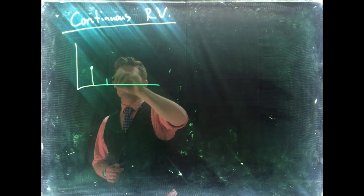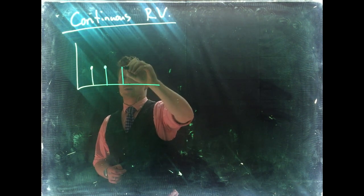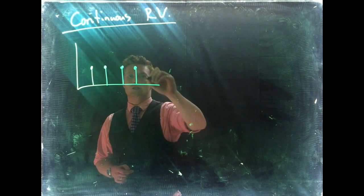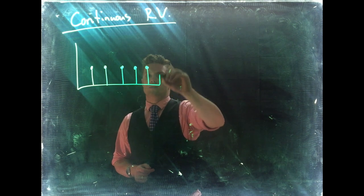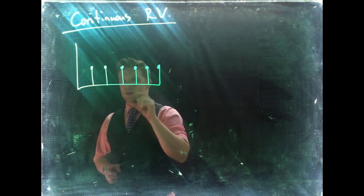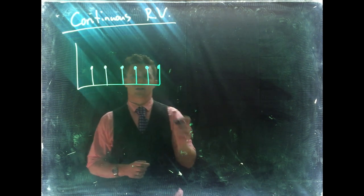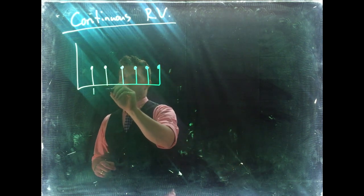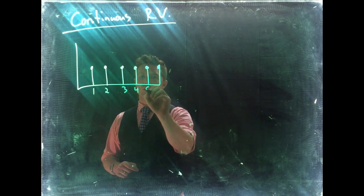So our uniform distribution, if we were talking about the discrete random variable like our dice problem, let's see if I can count six, there we go. They had equal likelihoods of happening and this is one, two, three, four, five, six.